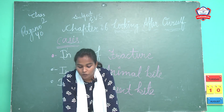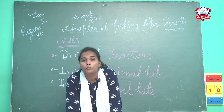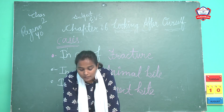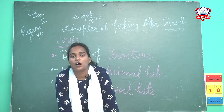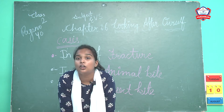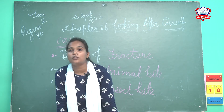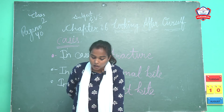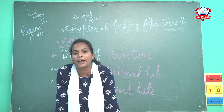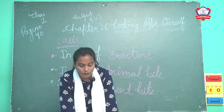In case of an insect bite, first remove the sting from the area — dunk hota hai, usko nikal dena chahiye. Then press ice cubes on the affected area — jahan pe insect bite hua hai wahan ice cubes apply karni chahiye. And then apply any antiseptic cream on that area.